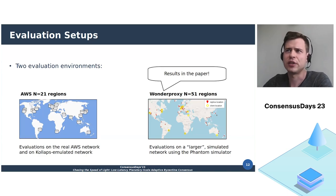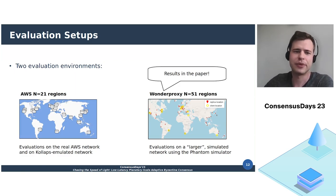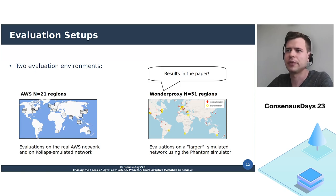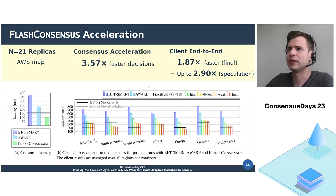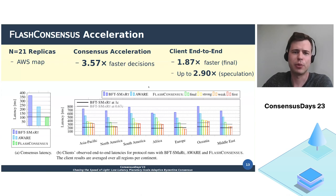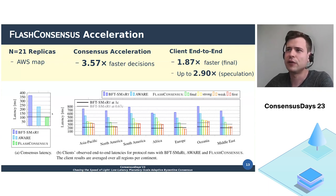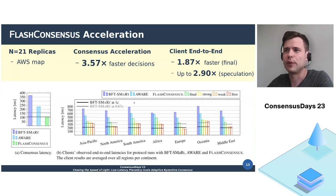We conducted extensive evaluations for Flash Consensus using mainly two different setups. The first is our AWS cloud-based network, for which we use the real network and also a collapse-based emulation. In this setup, we use 21 different geographic regions to place replicas. We also have a second setup with a larger network of 51 replicas. In our first experiment, we evaluated Flash Consensus on the AWS map with 21 replicas. In comparison to BFT-SMaRt, Flash Consensus can order transactions 3.57 times faster, meaning that consensus accelerates substantially. Even when waiting for more replies from the system, the observed end-to-end latencies also improve quite a lot.